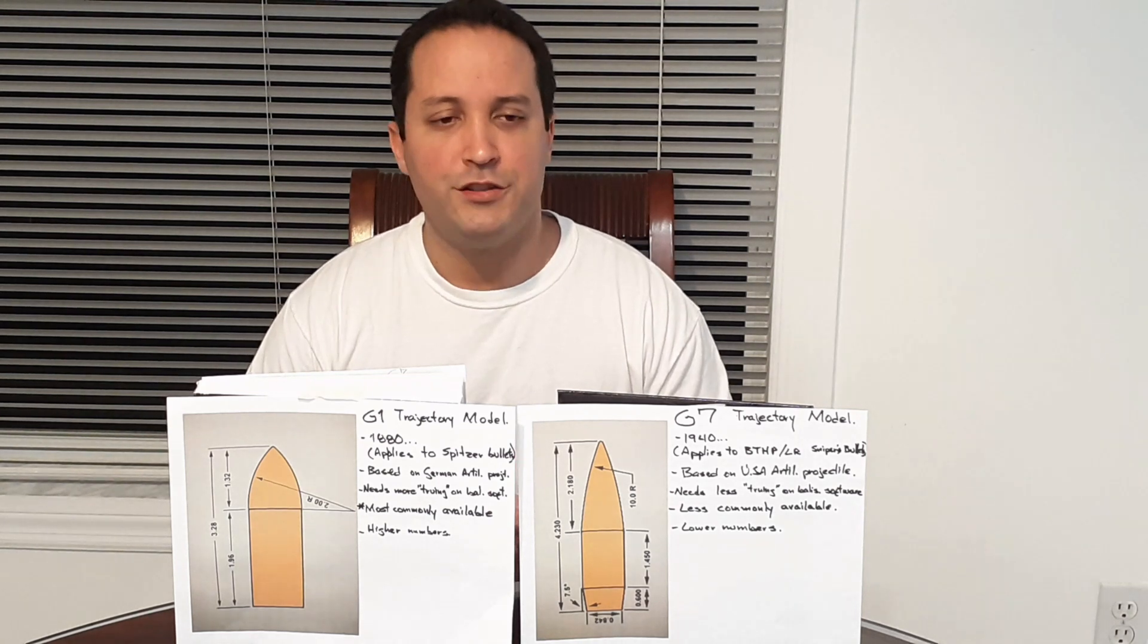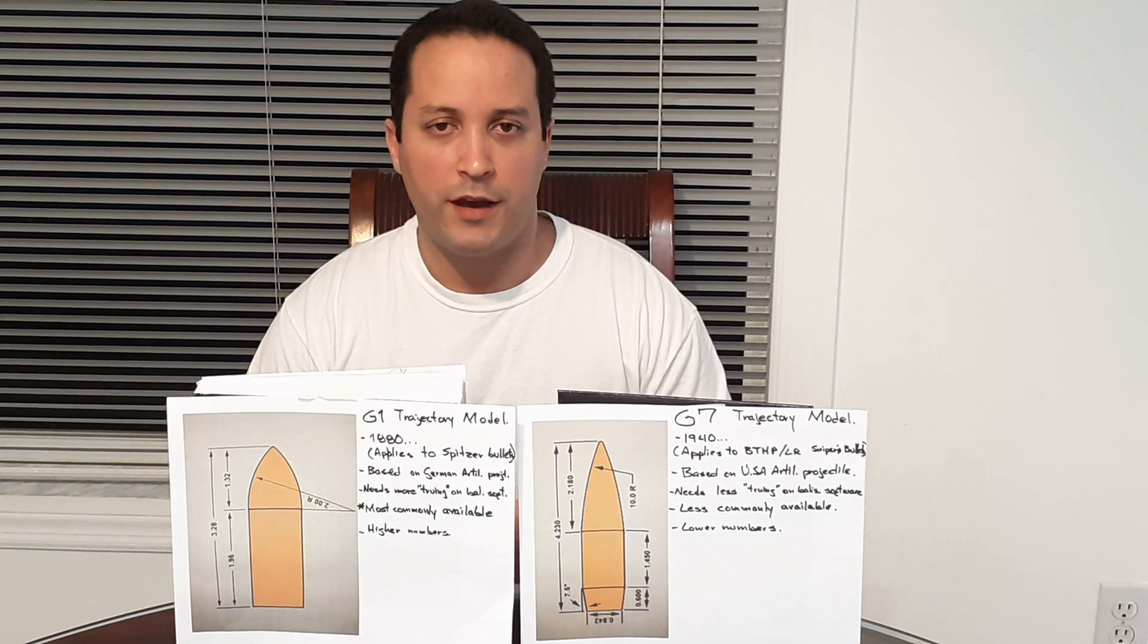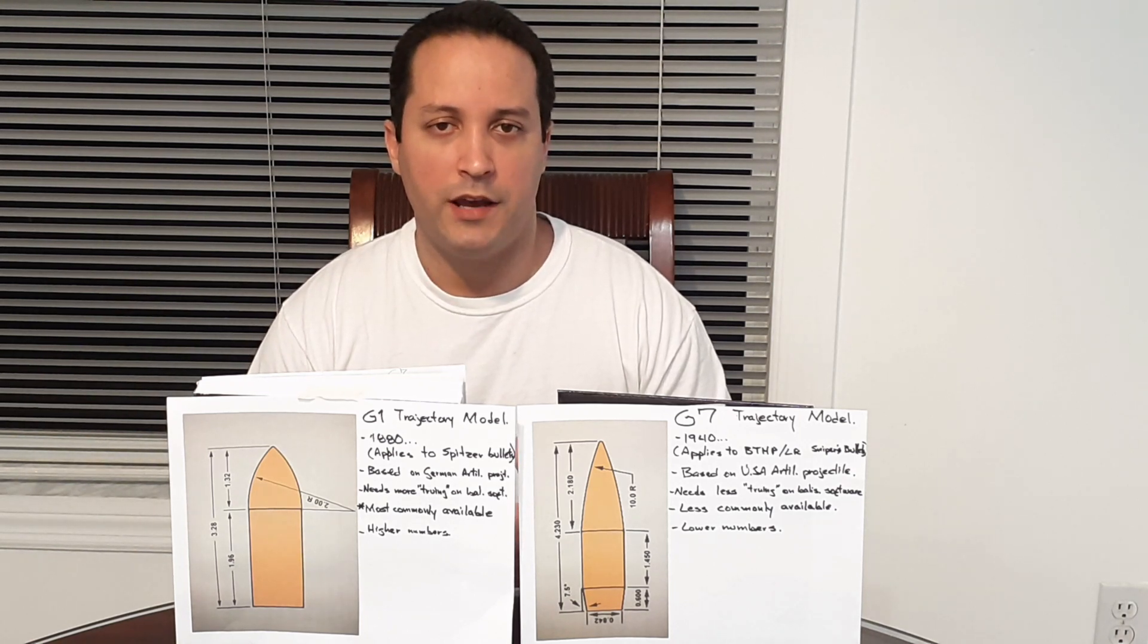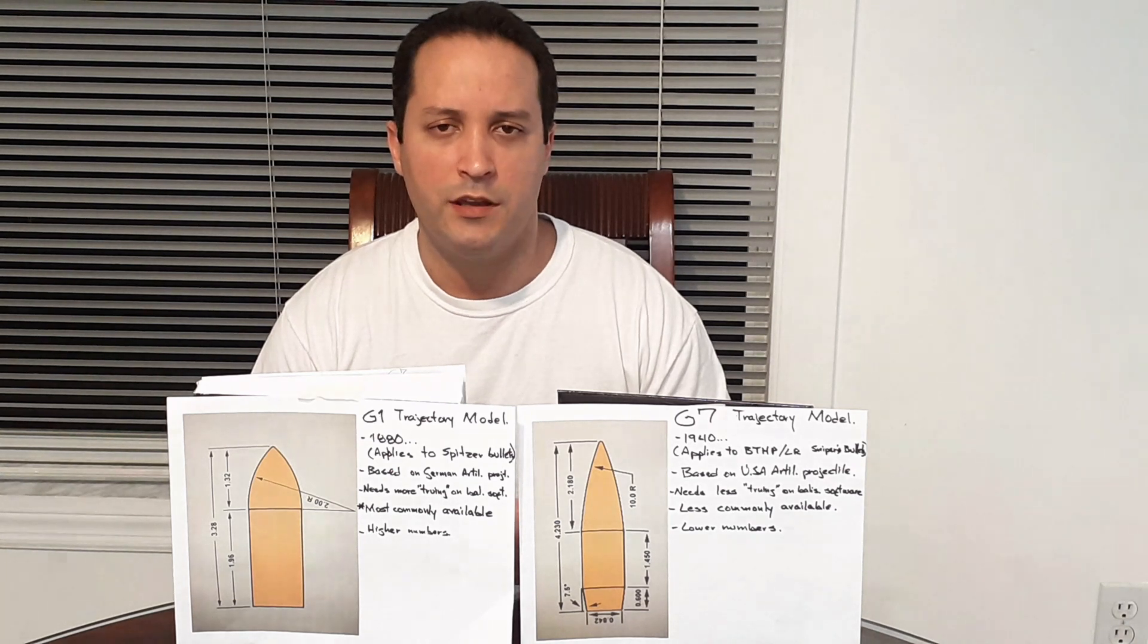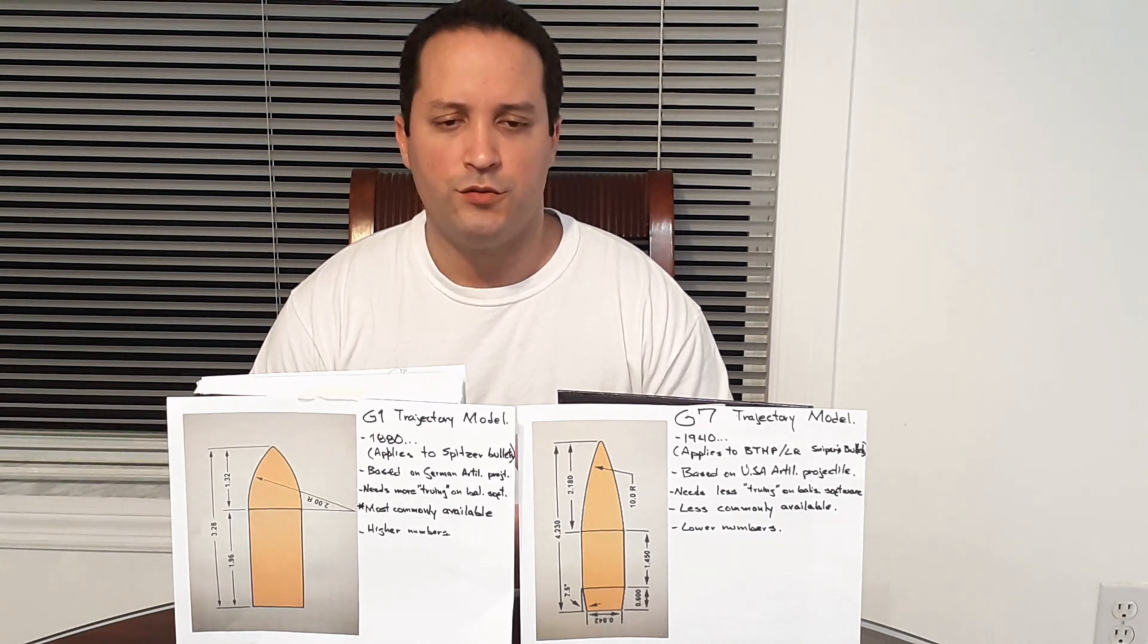However, the majority of bullet providers for reloaders and match-grade ammunition providers give ballistic coefficients on a G1. G1 is going to be most commonly available when compared to G7.